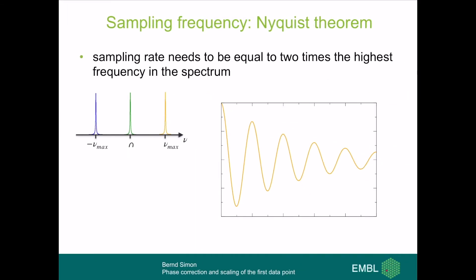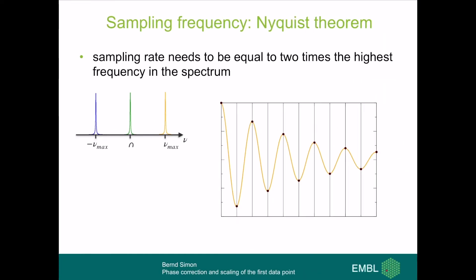What does this mean? Our spectrum spans from minus nu_max to plus nu_max — this is the range we examine after the Fourier transform. The highest frequency, nu_max, is the yellow frequency shown here. We have to sample two times per period: if we sample at time point zero, we need a second sampling point, then sample again two times in the next period, and so on. Our sampling rate is given by this relationship.